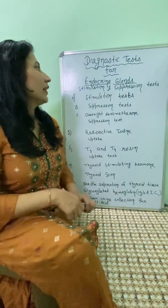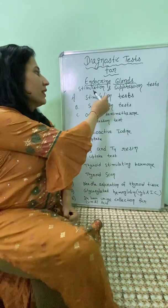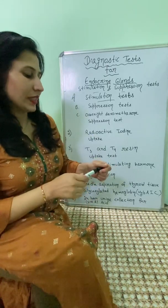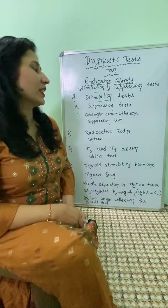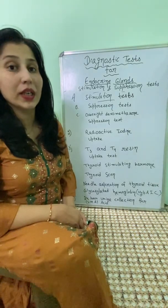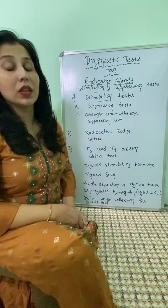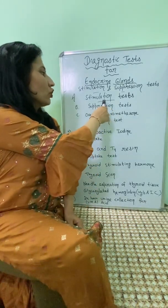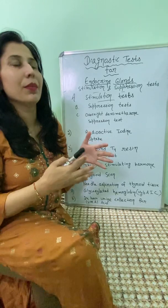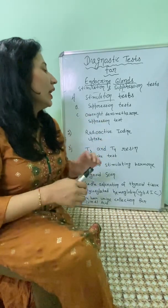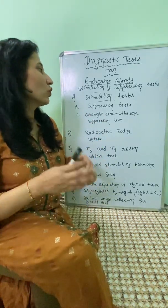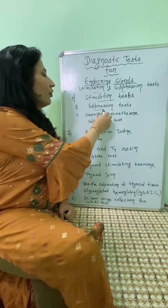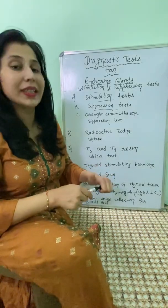First, we have the stimulation and suppression tests. In the stimulation test, if there is suppressed activity of the endocrine gland, we perform this test by giving some hormones to stimulate the endocrine gland. If there is still no stimulation, it means there is hypofunction of that gland.